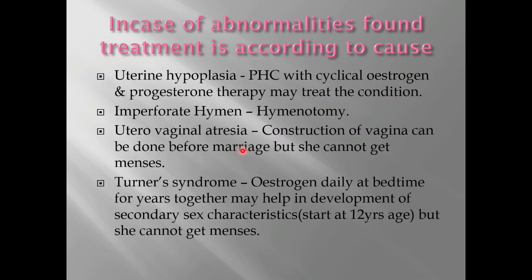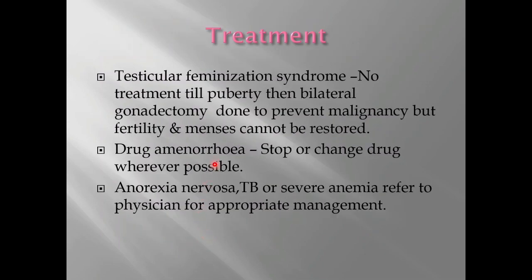For utero-vaginal atresia, construction of vagina can be done before marriage, but she cannot get pregnant or get menstruation because the uterus is not present. For Turner syndrome, estrogen daily at bedtime for years together helps in development of secondary sex characteristics, starting when the patient is around 12 years of age, but she cannot get menses. In testicular feminization syndrome, no treatment is needed till puberty, then bilateral gonadectomy is done to prevent malignancy, but fertility and menses cannot be restored.